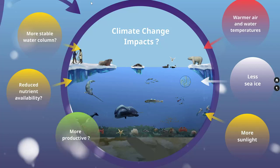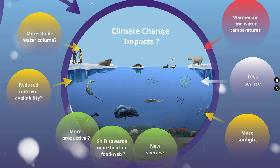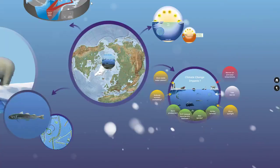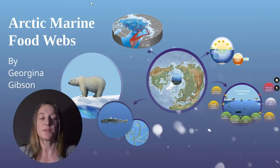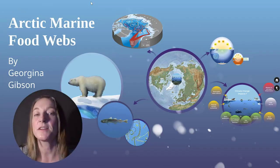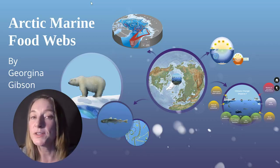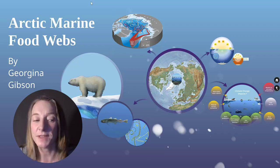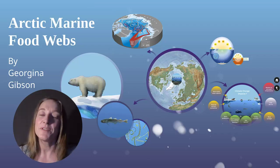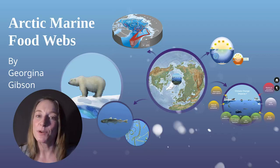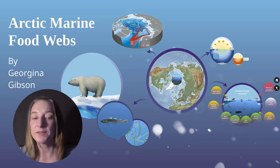We think the Arctic might become more productive. There might be a shift towards a more benthic food web. It's likely that we're going to see some new species in the Arctic, and it's definitely going to become harder to hunt. To summarize, all of the fish and mammals in the Arctic are reliant on the primary production by the marine plankton. By controlling light and nutrients, the physics of the ocean determines how productive the area can be. I hope you've enjoyed this module on Arctic marine food webs. In the next modules, you will learn more about fish and marine mammals that occupy the high trophic levels in the marine food web.